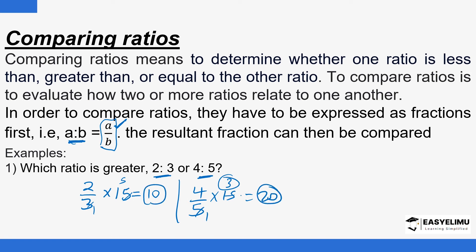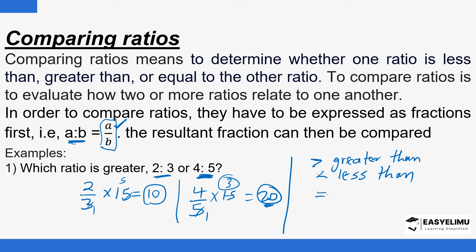The values obtained are the ones we compare. The one giving the greater value is the greater ratio. This fraction here gives us 20, so 4 over 5 is greater. That means the ratio 4 is to 5 is greater compared to the other. We can use the greater-than symbol. We have the symbols: greater than, less than, and equal to — and we use them appropriately.